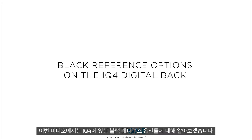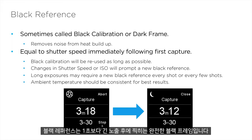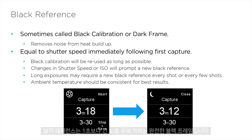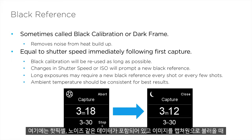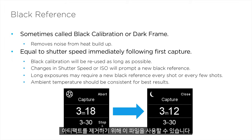In this video we will look at the black reference options in the iQ4. A black reference is a completely black frame taken after any exposure longer than one second. This contains data like hot pixels and noise, and when your image is imported into Capture One, it can use this file to get rid of these artifacts.